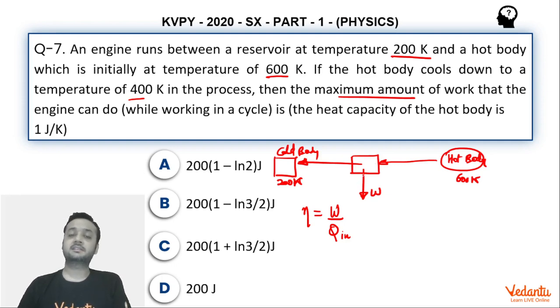The engine which is most efficient will do the most work. We already know that the most efficient engine is the Carnot engine. Carnot engine efficiency is 1 minus T cold upon T hot, sink temperature upon source temperature.